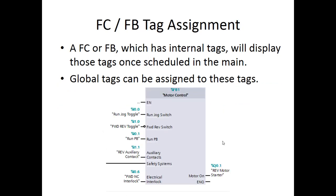Here was the tag assignment for our scheduled motor control. The local tags were shown inside here — these were all the things we had to have true. Then we associated the global tags with these. For example, the run-jog switch we put the run-jog toggle there; the forward-reverse switch we put that there; the run pushbutton we associated those global tags with our local tags. In this case, motor control. Same with the output.